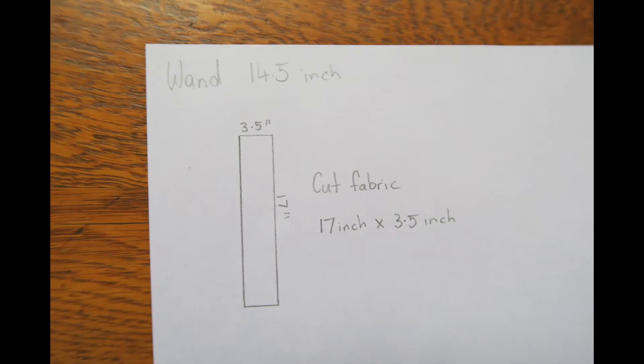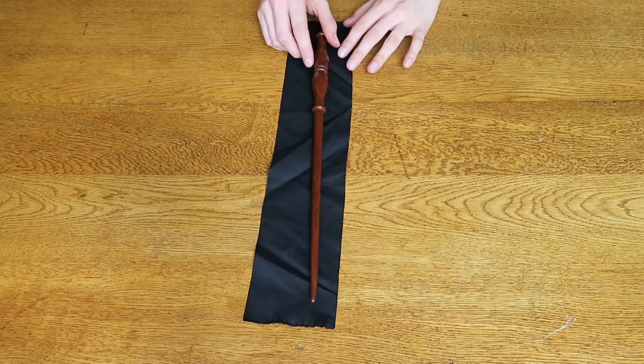Next let's move on to the pocket. You will need to cut a piece of fabric that is two inches longer than your wand and about three and a half inches wide. For the top, fold down the top edge one centimeter and iron.